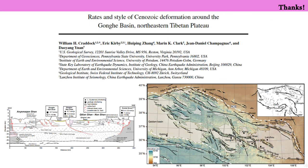This is the end of our summary of the paper 'Rates and Style of Cenozoic Deformation around the Gonghe Basin, northeastern Tibetan Plateau.' Between 99 and 101 degrees east, active shortening appears to be accommodated by arrays of thrust faults on opposing sides of the Qilian Shan-Nanshan, consistent with the description of the region as a doubly vergent orogenic belt.